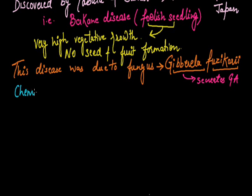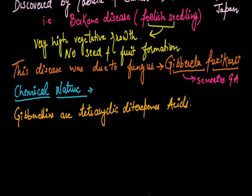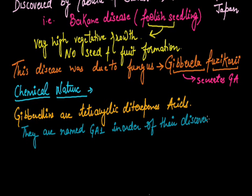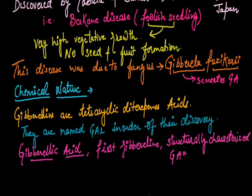If we study the chemical nature of gibberellin acid, gibberellins are tetracyclic diterpene acids. That means they are acidic in nature. They are named GA1, GA2, in order of their discovery. This is all about the chemical nature of gibberellin.